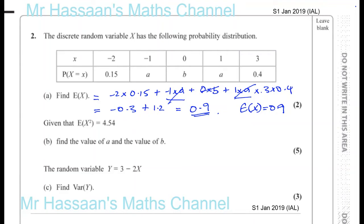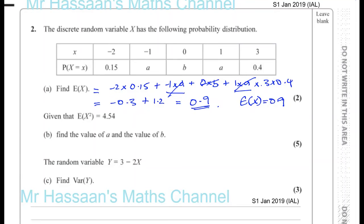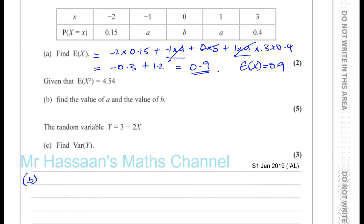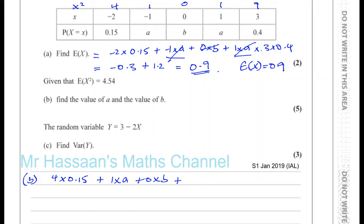Part B says: find the value of A and the value of B, given that E(X²) = 4.54. For part B, I'll first write down X squared values: 4, 1, 0, 1, and 9. So the expected value of X squared will be 4 times 0.15, plus 1 times A, plus 0 times B, plus 1 times A, plus 9 times 0.4, and we know that equals 4.54.